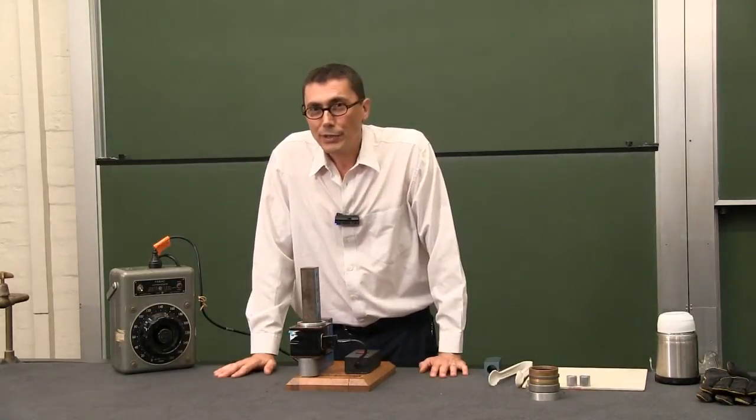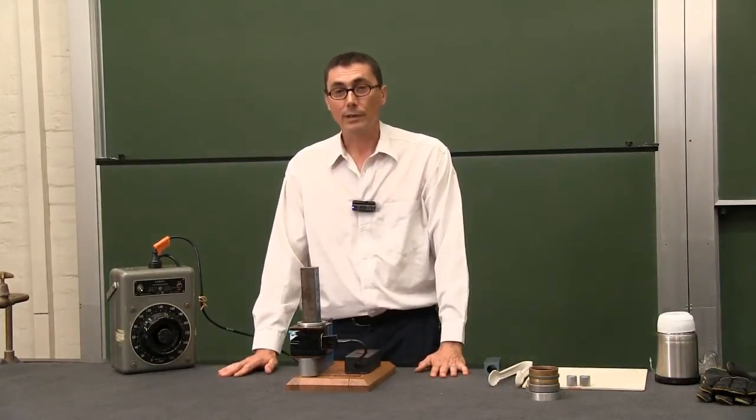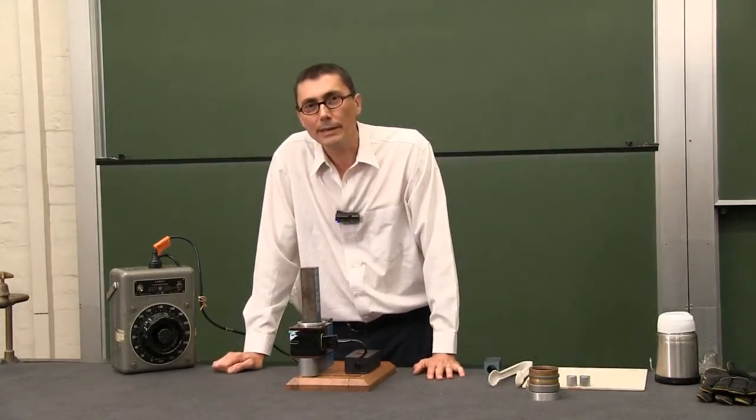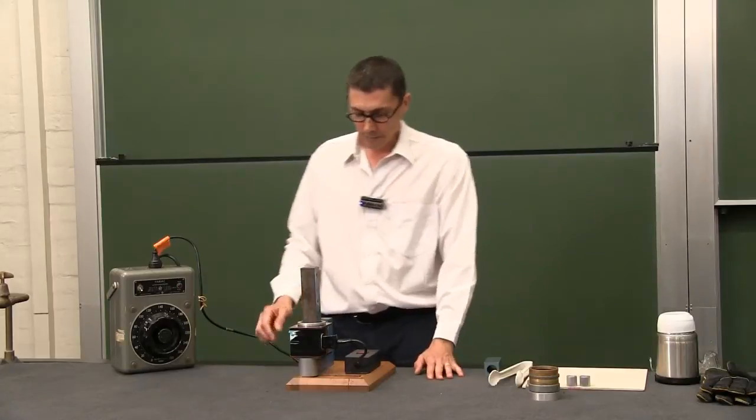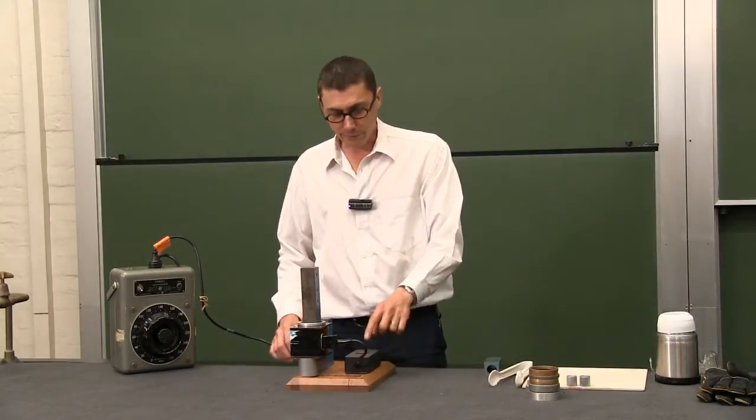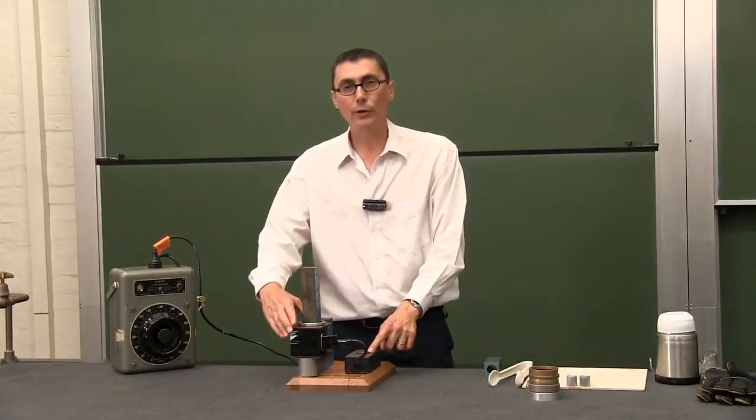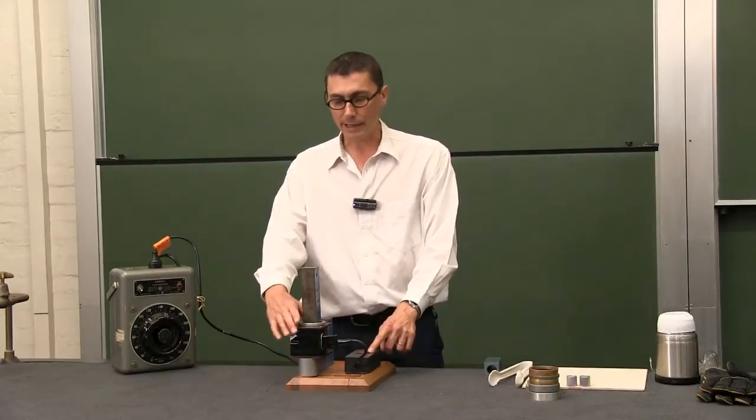Now the explanation that you'll see in most textbooks about the jumping ring experiment is this. Initially because the switch is off there is no current in the coil and so therefore there is no magnetic field.